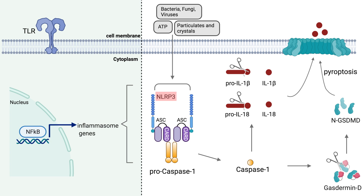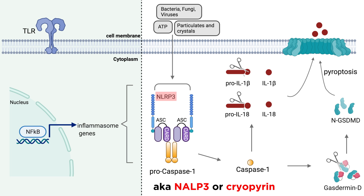NLRP3 is one of the best studied inflammasomes, and is primarily expressed in myeloid cells like macrophages and dendritic cells. It is also known as NLP3 or cryopyrin. NLRP3 can be activated in response to a huge range of bacterial, fungal, and viral infections, as well as many DAMPs.